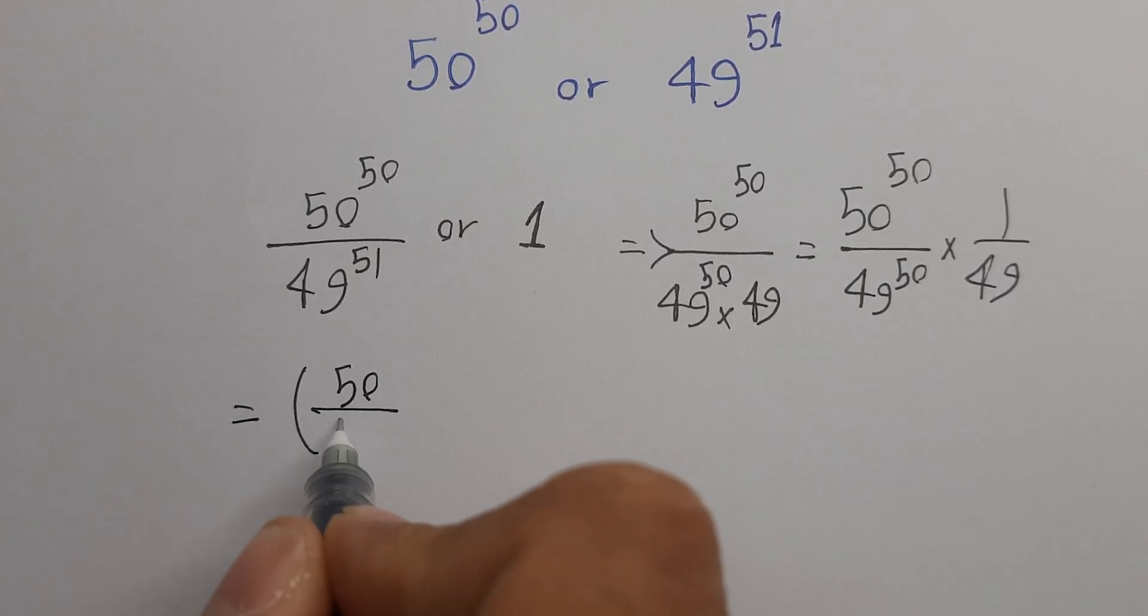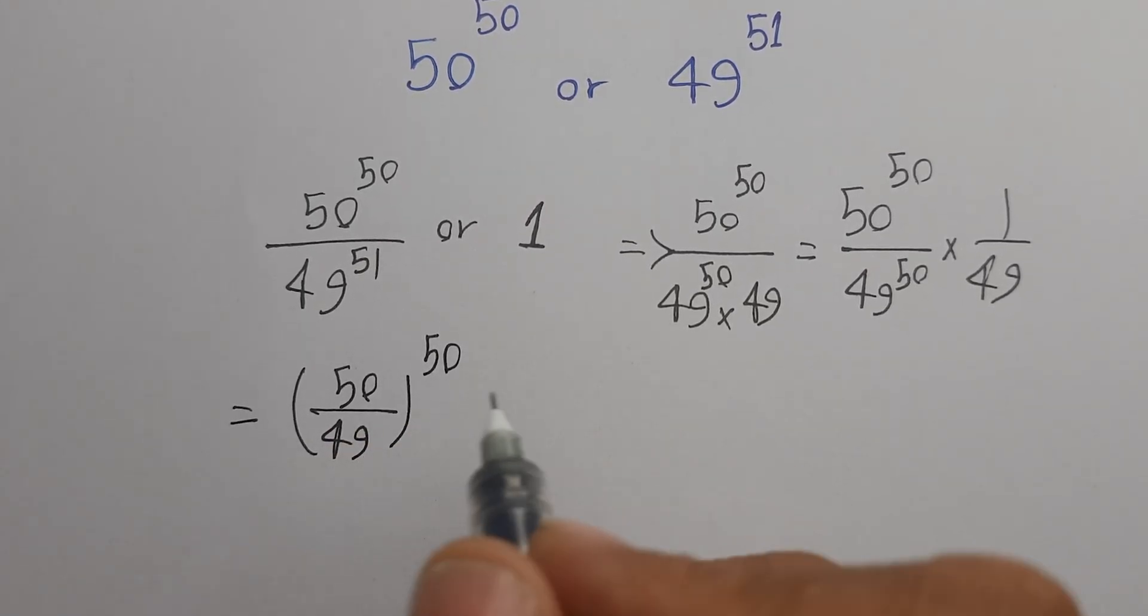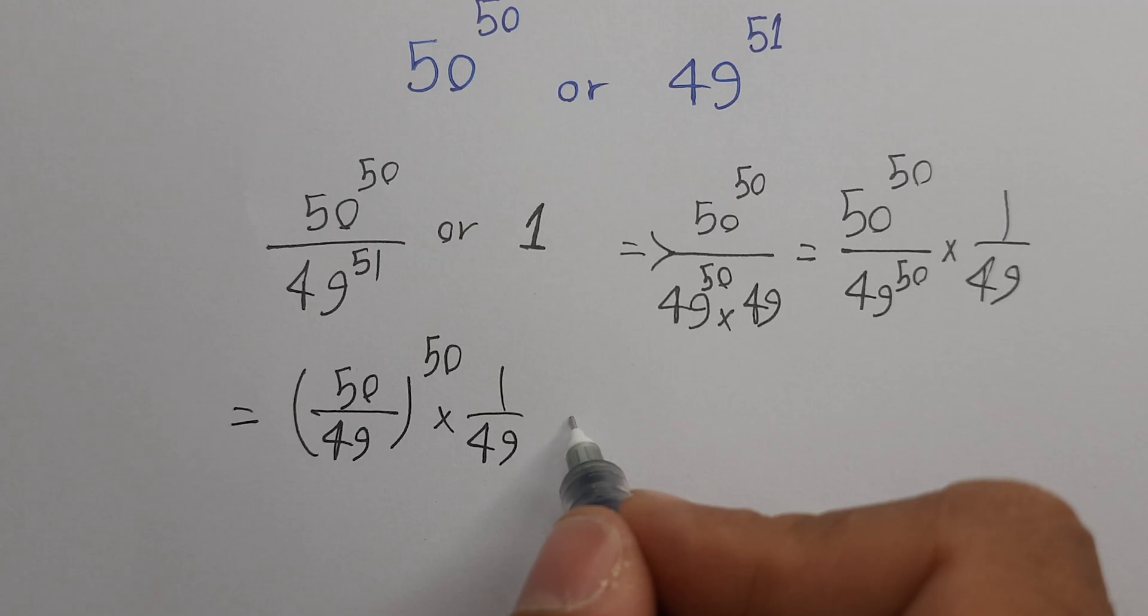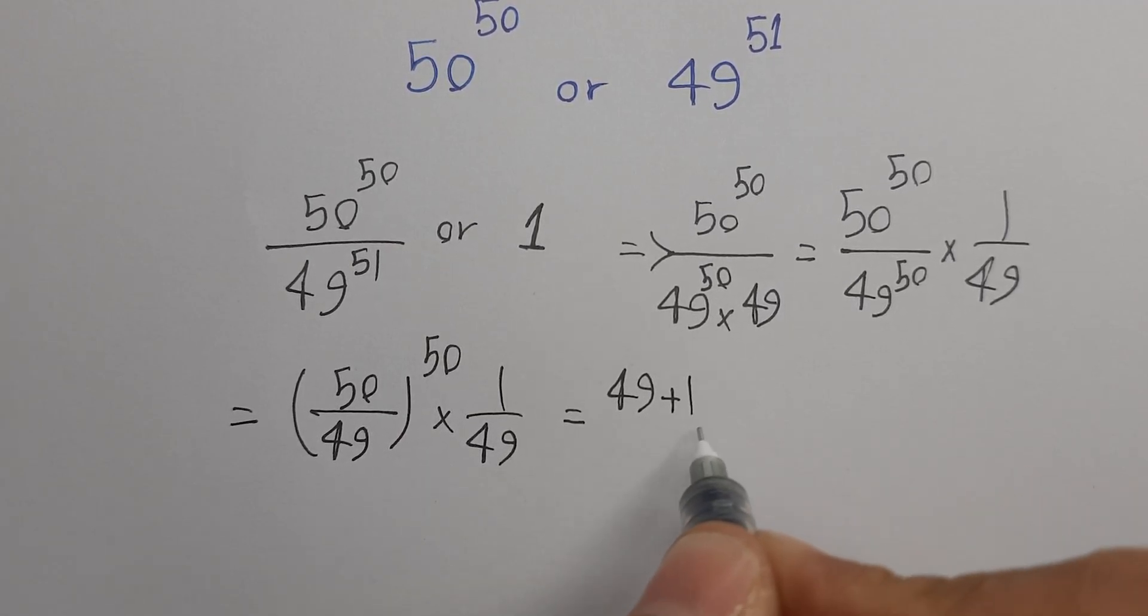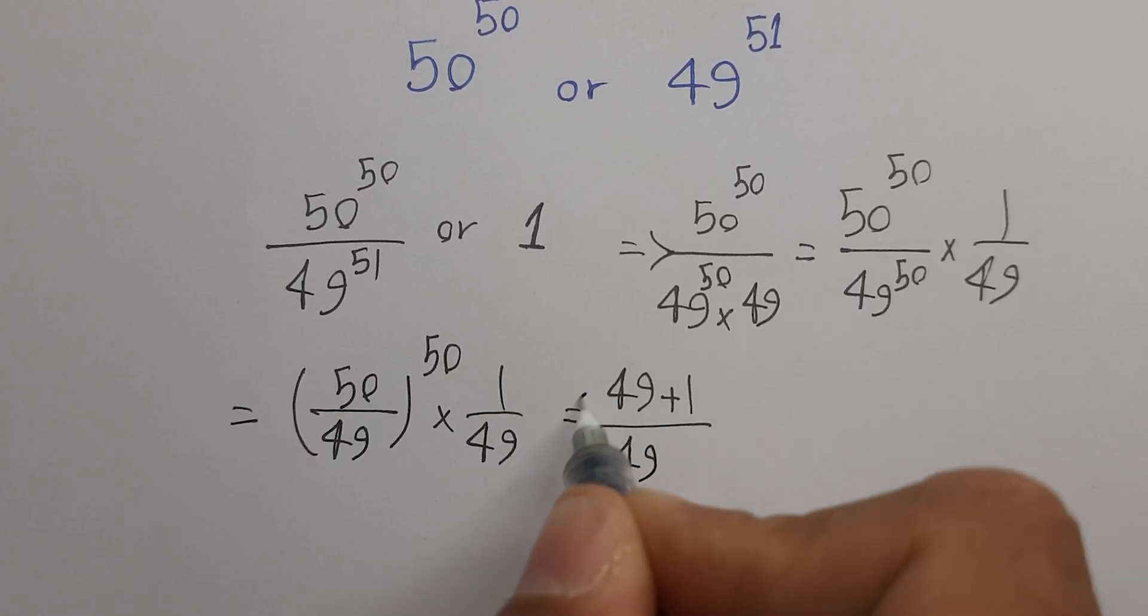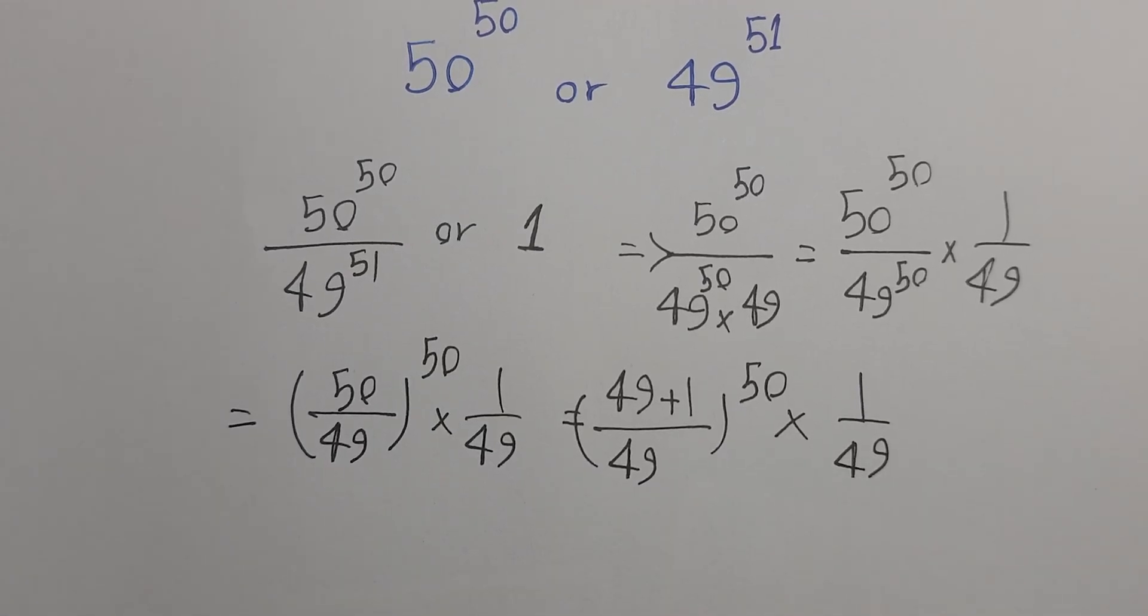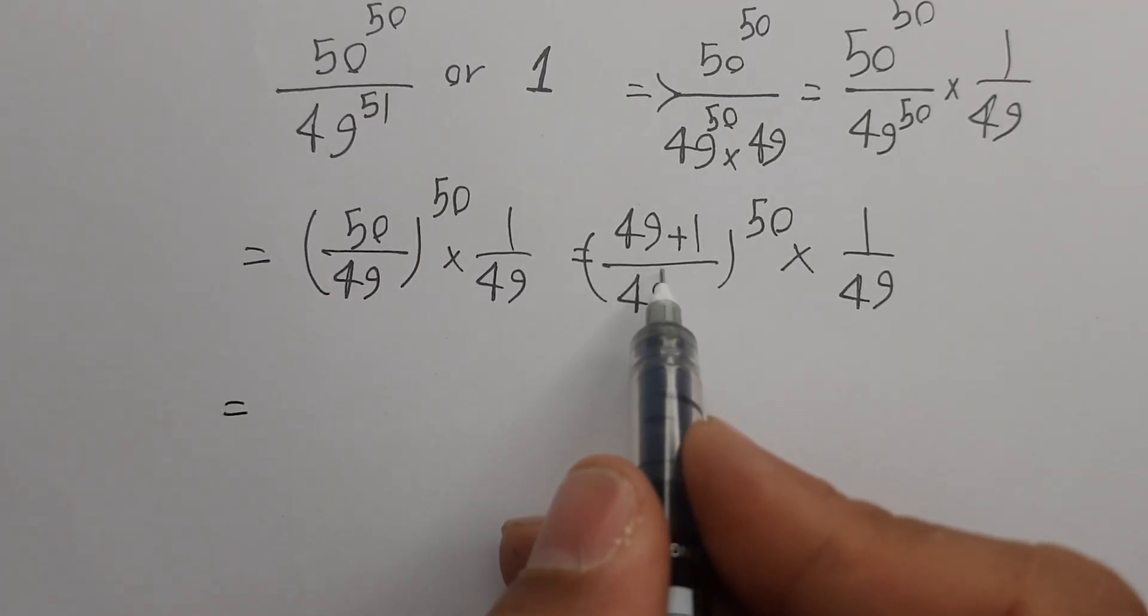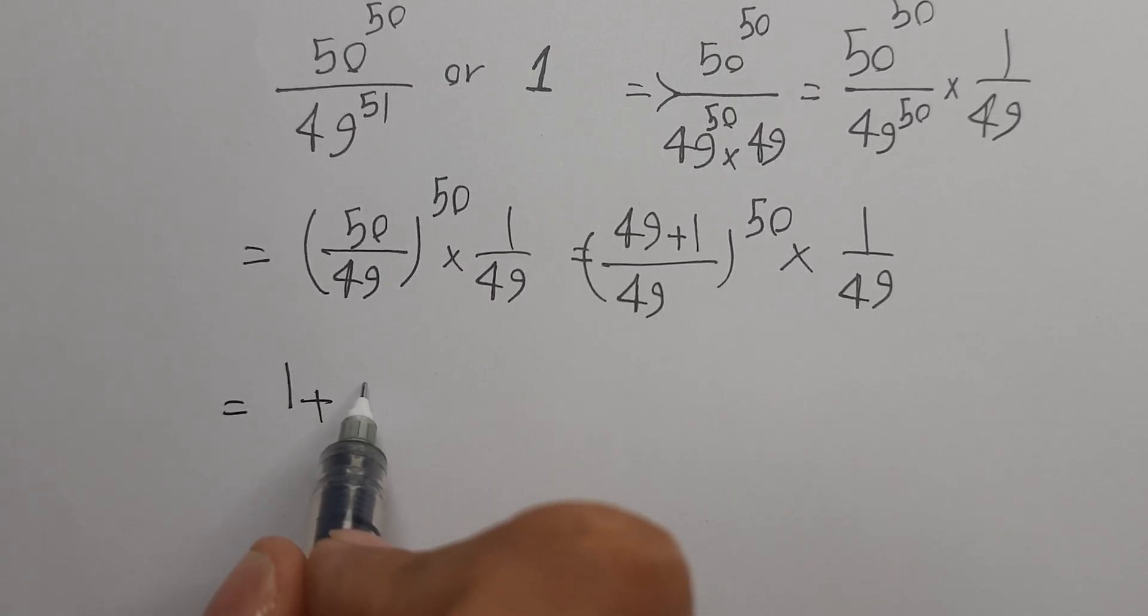So 50 is 49 plus 1 over 49 all power 50 times 1 over 49. Now here we can divide, we have 1 plus 1 over 49 all power 50 times 1 over 49.